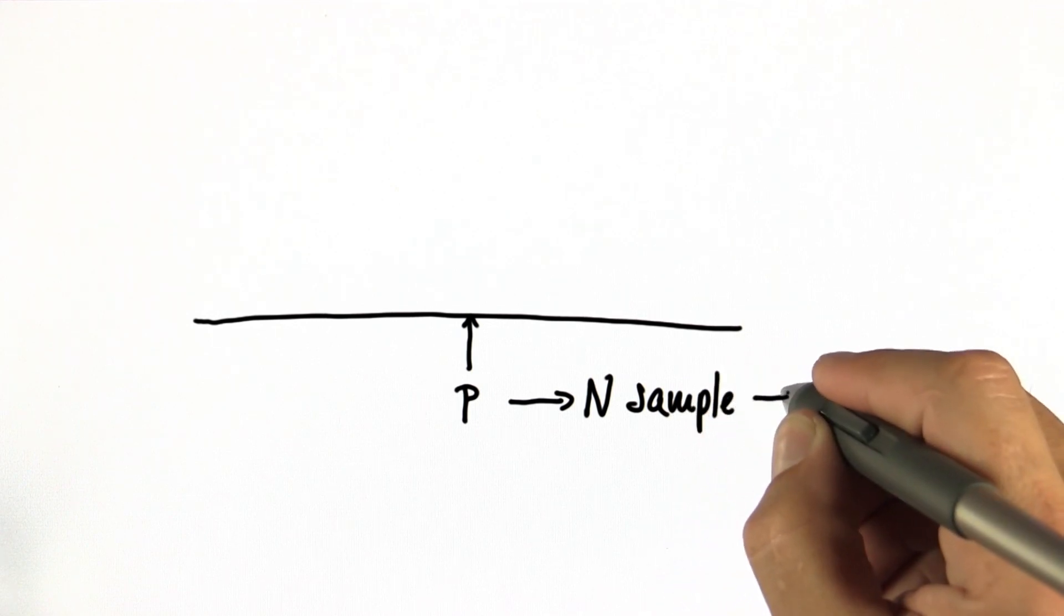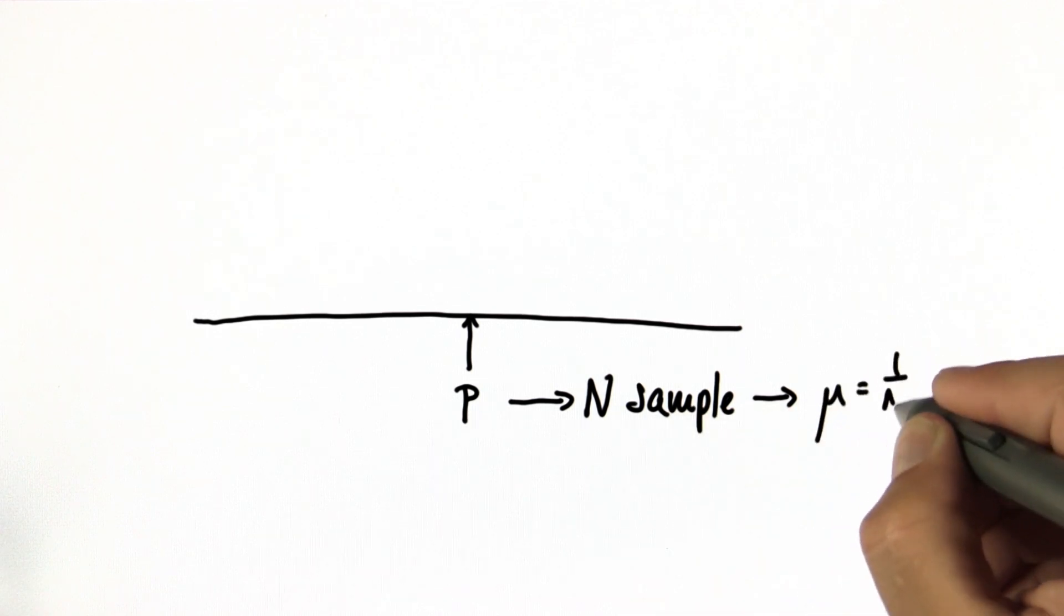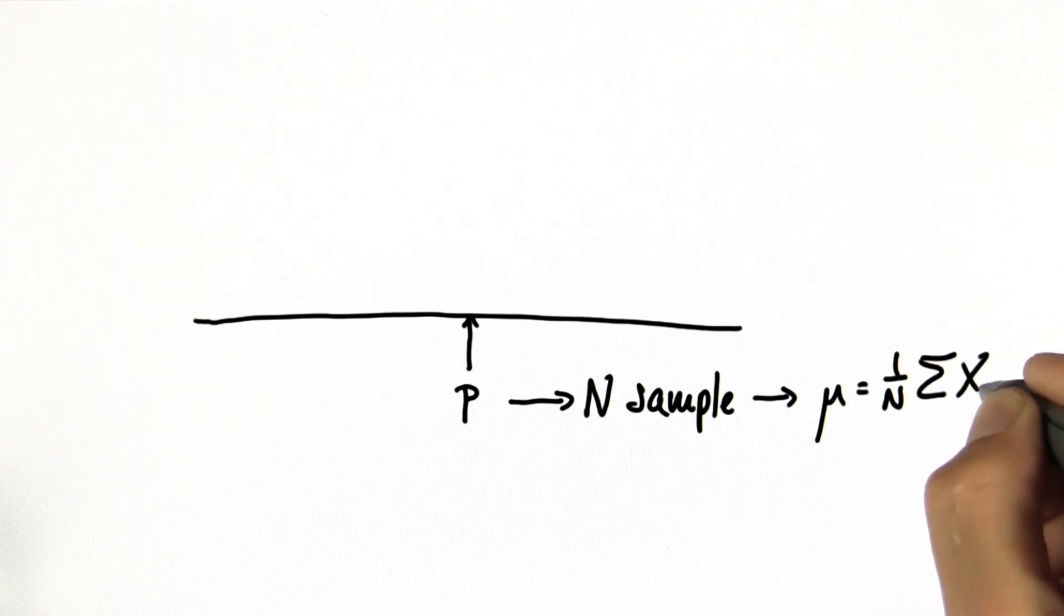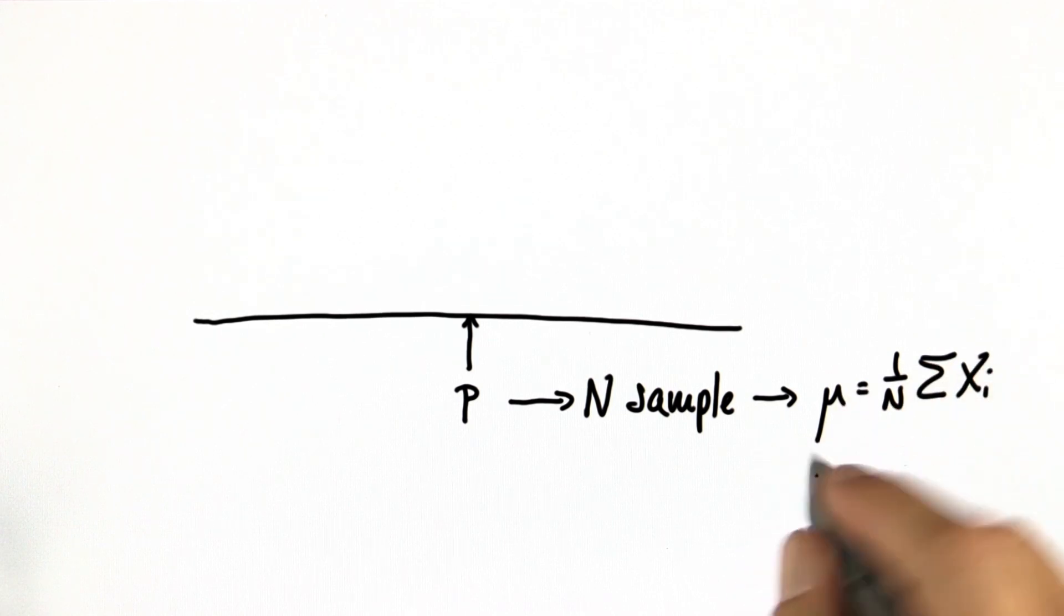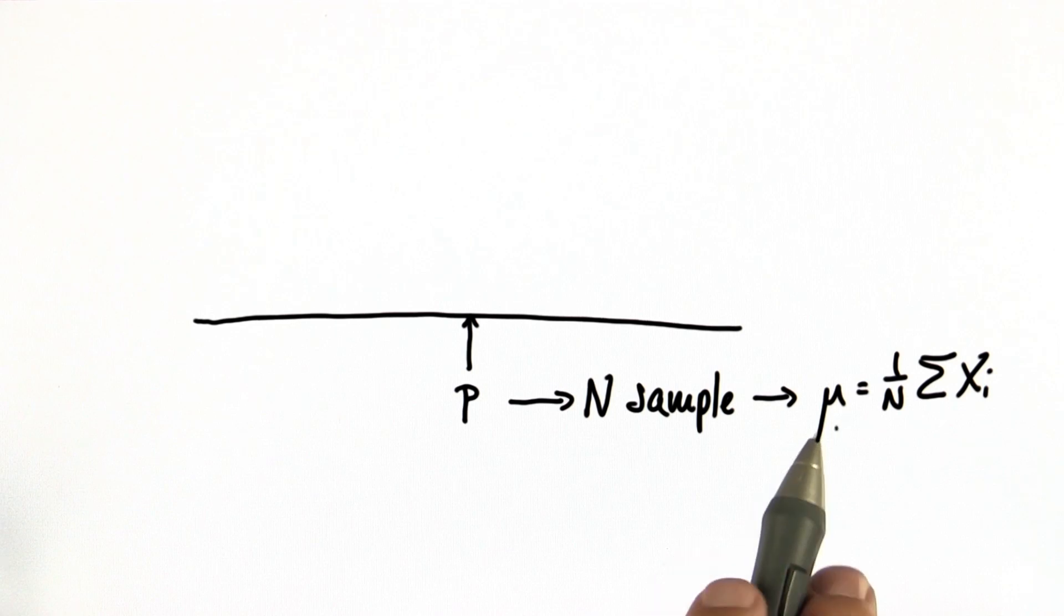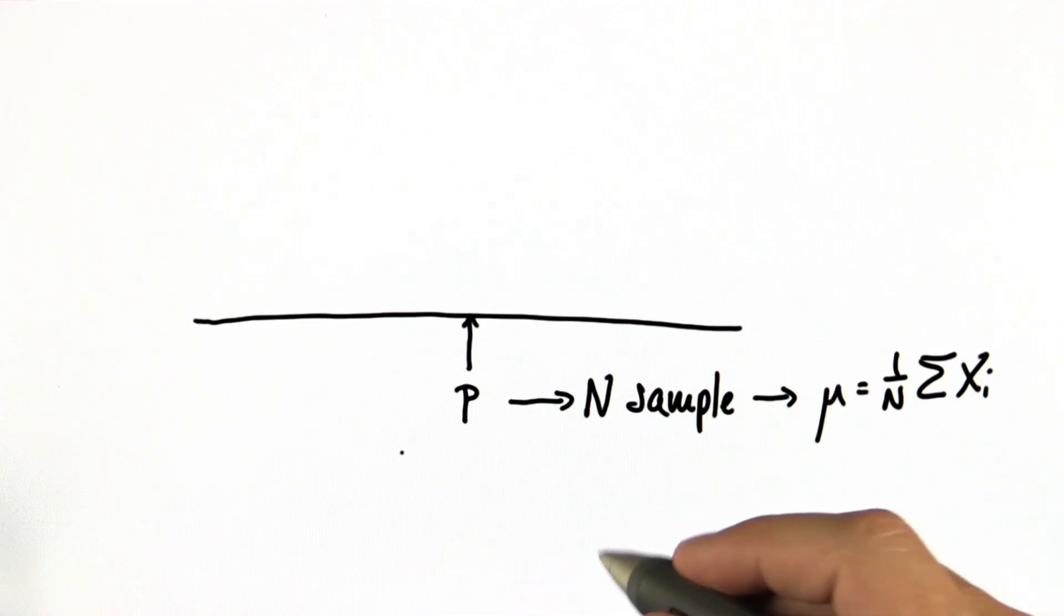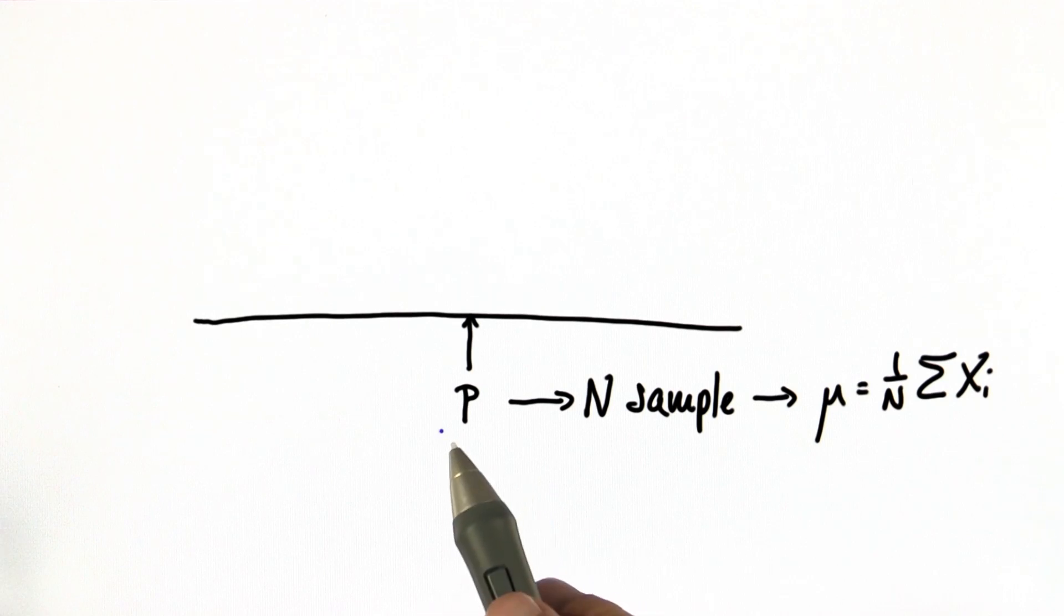There's a true probability p for the coin. Now we know that we sample the coin n times and compute from it our empirical mean, using the formula you well know, that it's well true that it could easily happen that p doesn't equal μ. And that's because flipping the coin a finite number of times gives us just an estimate of the true probability p.